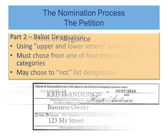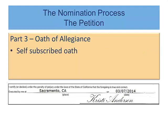And finally, part three: the oath of allegiance. The candidate must execute the oath of allegiance at the bottom of the affidavit. This is a self-subscribed oath — simply date and sign at the bottom. The candidate is not required to have the oath given in the presence of the city clerk or a notary public.